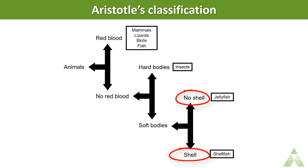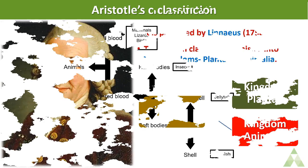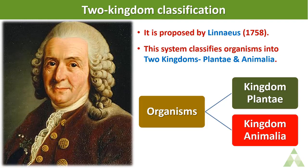The common characteristic in all animals without red blood cells is that they don't have red blood cells. After Aristotle, Linnaeus did magnificent work in classification. He proposed a two-kingdom classification in 1758, classifying organisms into either plant or animal. It was a very simple classification and continued for a long period of time.